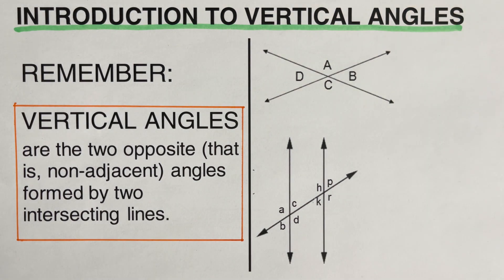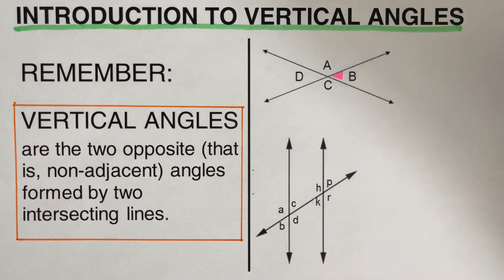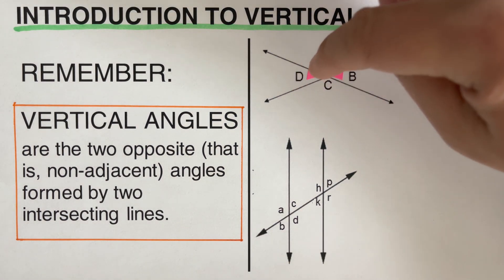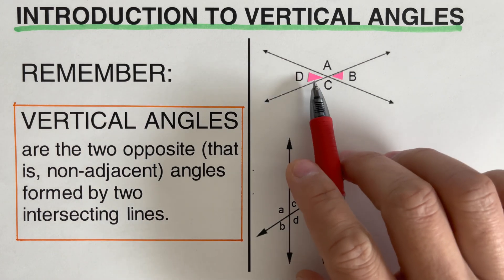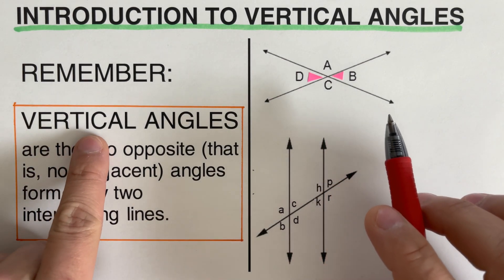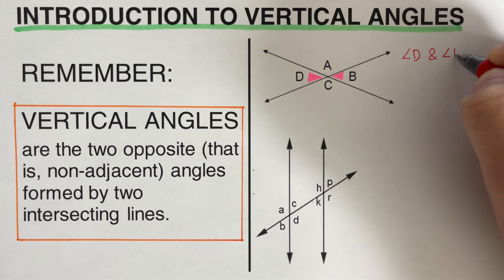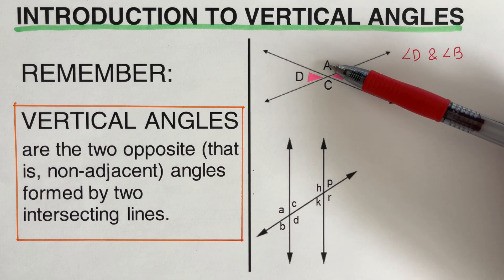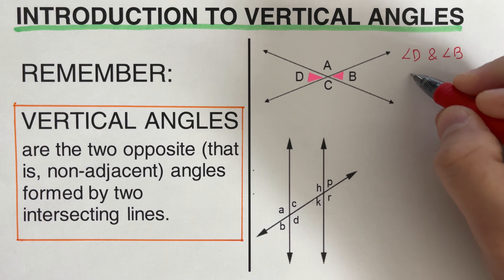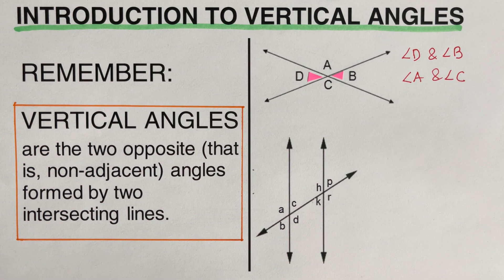Let's take this first example. I have prepared a color paper so we can label the ones that are opposite. We can say that corner B and corner D are opposite — they are across from each other — so angle D and angle B are vertical angles. Similarly, angle A and angle C are also vertical angles.